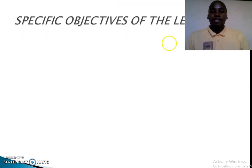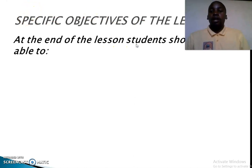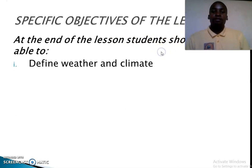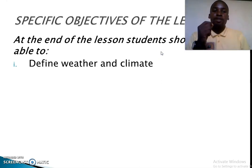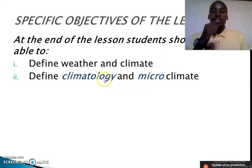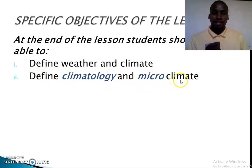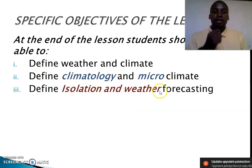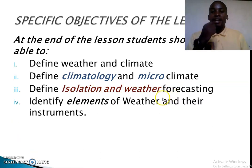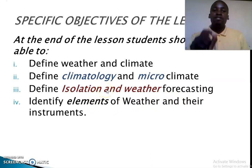Today the specific objectives of the lesson are: at the end of the lesson, students should be able to — first, define weather and climate; second, define climatology and microclimate; third, define insolation and weather forecasting, and identify elements of weather and their instruments. I believe that at the end of this lesson, everybody will have achieved these objectives.